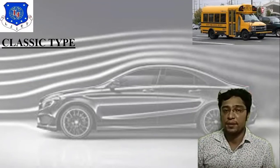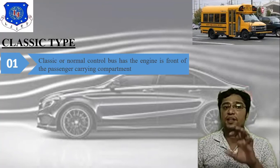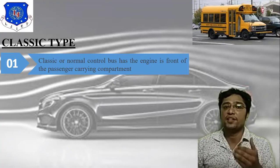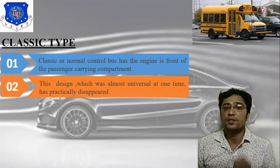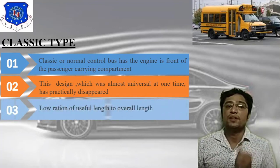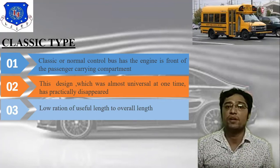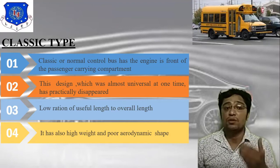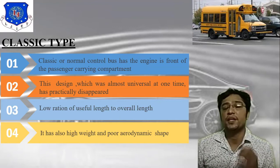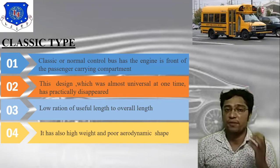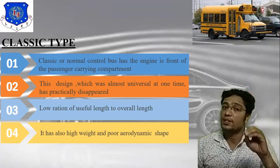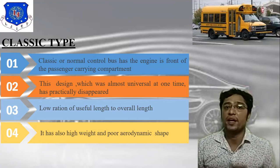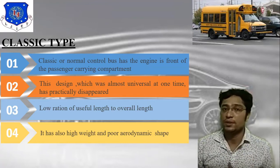The classic or normal control type bus has the engine in front of the passenger-carrying compartment. This design was almost universal at one time but has practically disappeared. It has a low ratio of useful length to overall length, high weight, and poor aerodynamic shape. Since increased air resistance decreases vehicle performance, the poor aerodynamics of this design is a significant disadvantage.